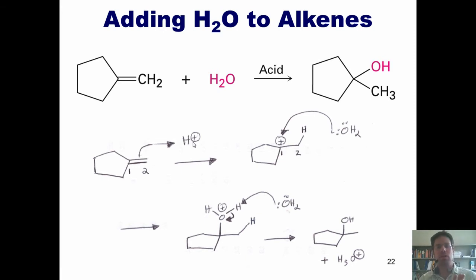Thus, we see that the OH always ends up going into the more substituted carbon. That is, the carbon that would give the more stable carbocation intermediate. Which, in examples like this, is the internal carbon, while the hydrogen from the acid ends up going on the external carbon in the carbon-carbon double bond.